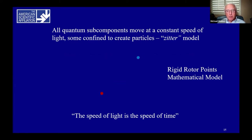This is the simplest representation of the zitter model, a simple rotor, rigid rotor model, with subcomponents moving at the speed of light. Again, the speed of light is the speed of time.